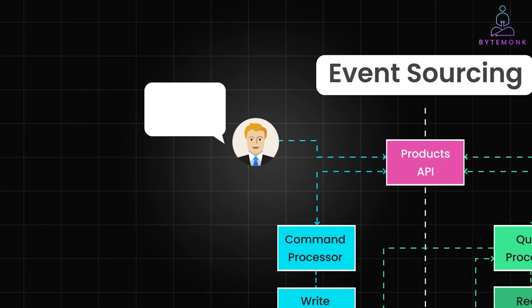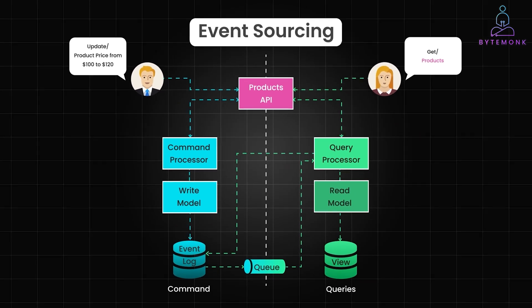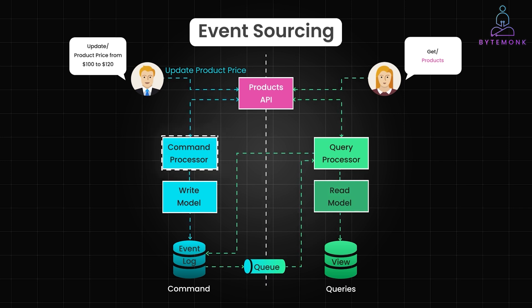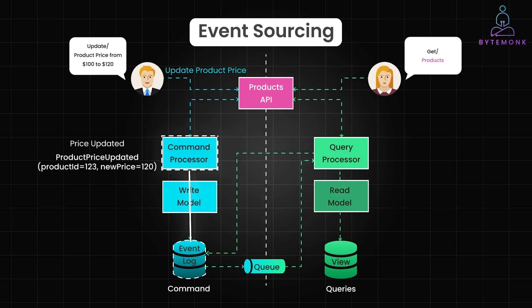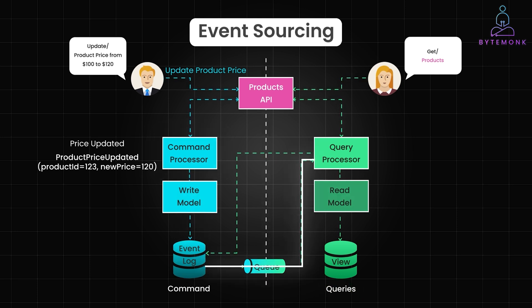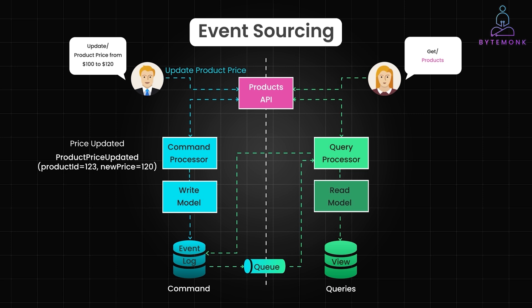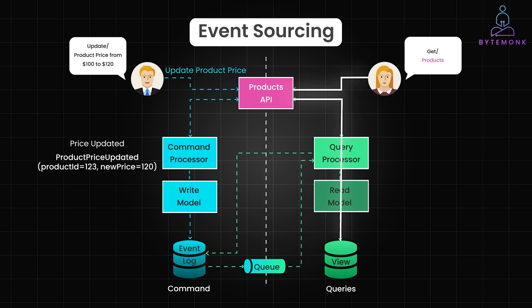Let's tie it all together with a scenario where a seller decides to update a product price from $100 to $120. A command like update product price is sent to the command service. The command service processes the command, validates the business rules, and generates a price updated event. The event is stored in the event log or event store. The query side typically subscribes to the event log or listens to the message broker that broadcasts new events, and this is how it detects when a new event like price updated is generated. Upon detecting the event, the query service processes it — for example, it might update the price in the product read model. When a user queries product details, the query service retrieves the data from the read model, which now reflects the latest price of $120.